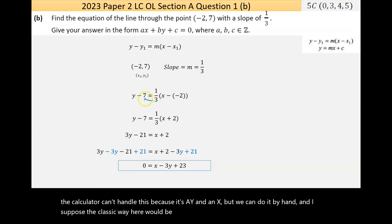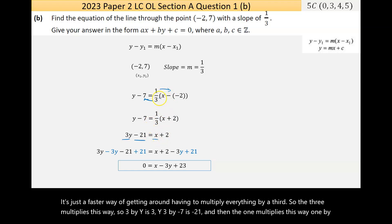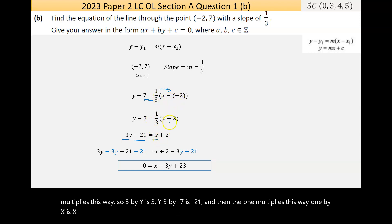The classic way here would be to multiply the 3 this direction and the top part this direction - it's a faster way of getting around having to multiply everything by a third. So 3 by y is 3y, 3 by -7 is -21. Then the 1 multiplies this way: 1 by x is x, 1 by 2 is 2, but minus by minus changes to positive.